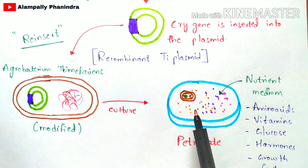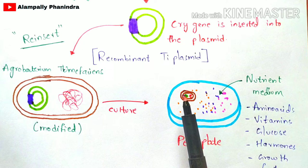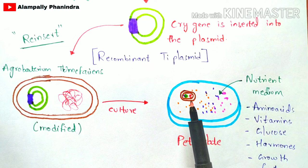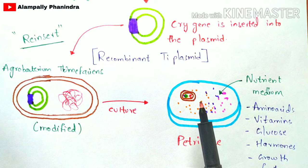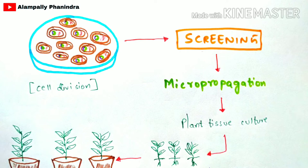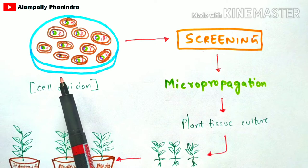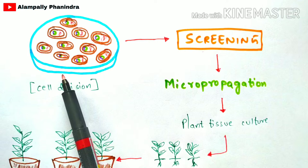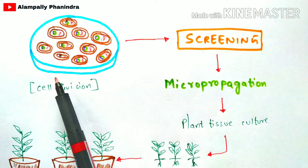The Agrobacterium tumefaciens undergoes cell division in the petri plate. As the number of bacteria increases, the nutrient medium gets utilized and becomes absent. As cell division proceeds, the number of modified Agrobacterium tumefaciens cells increases. Importantly, all of these cells consist of the cry gene, because the recombinant Ti plasmid containing the cry gene was inserted into the bacterium — so all cells produced by cell division also carry the cry gene.